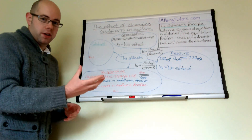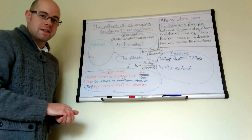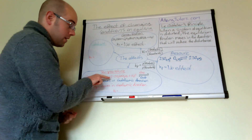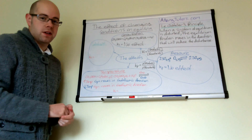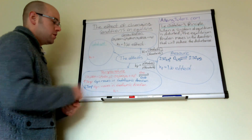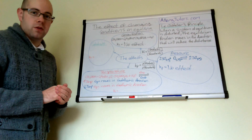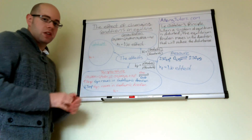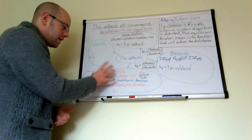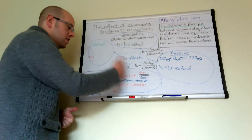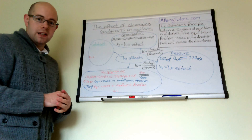Temperature does affect the ratio of products to reactants, so it affects the value of Kc. If the equilibrium shifts to the right — more products — the value of Kc increases. If the equilibrium shifts to the left — more reactants — the Kc value decreases. Generally, a Kc value lower than one means equilibrium lies to the left, and a value greater than one means it lies to the right. You need to know how temperature affects equilibrium and its effect on Kc.